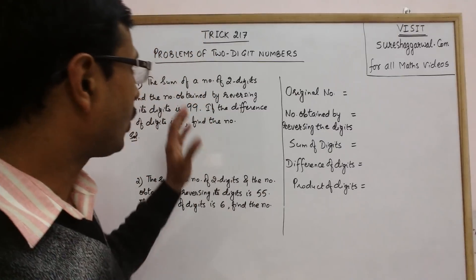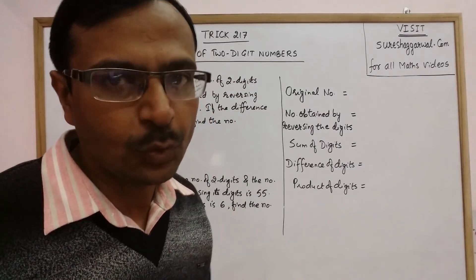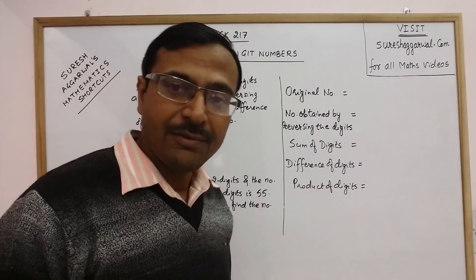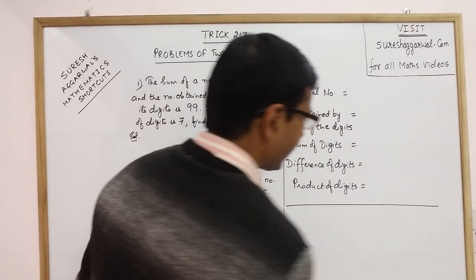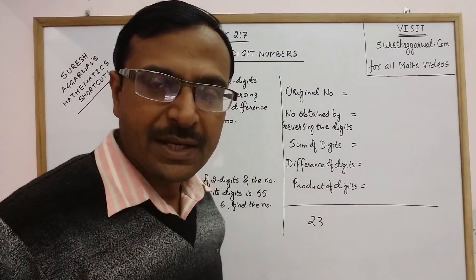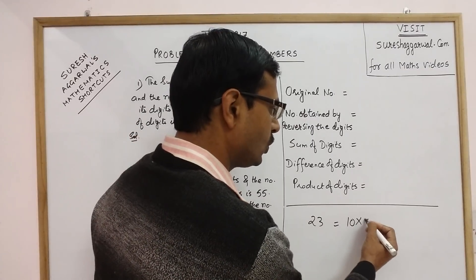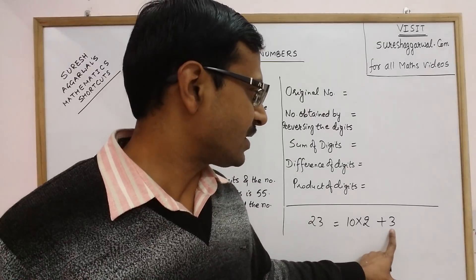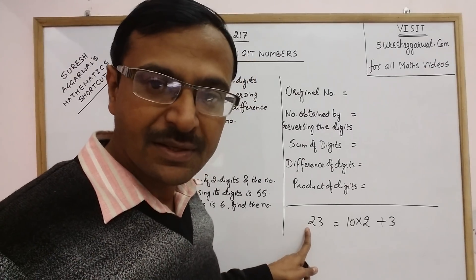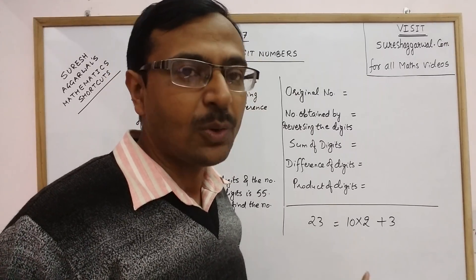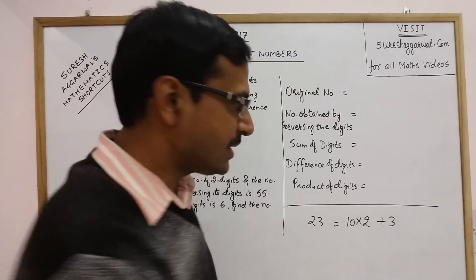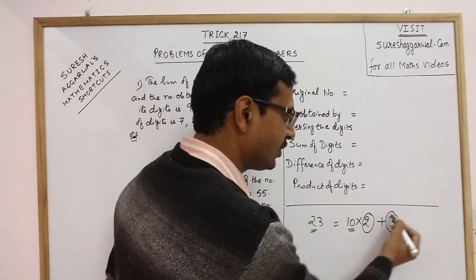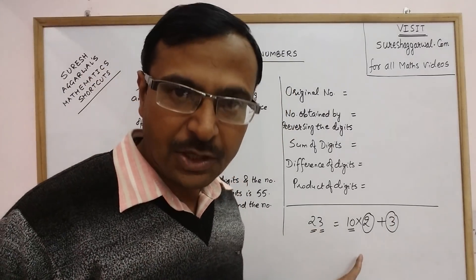Whenever we talk of two-digit numbers, there have to be two variables because one digit is in the units place and the other is in the tens place. For example, the two-digit number 23 in expanded notation is written as 10 into 2 plus 3. The digit 3 in the units place is multiplied by 1, while 2 in the tens place is multiplied by 10.